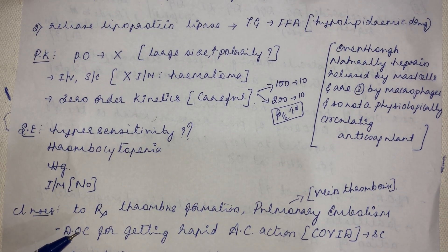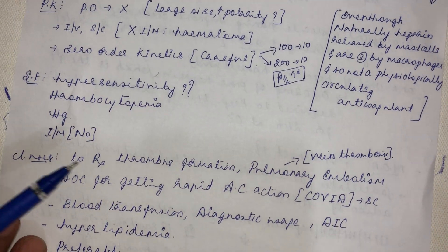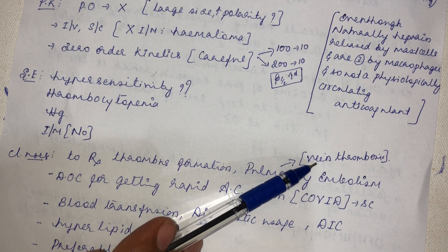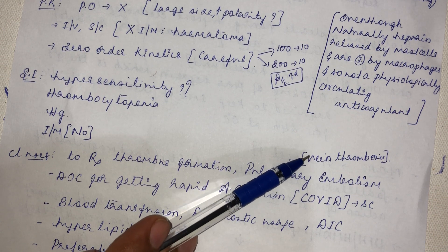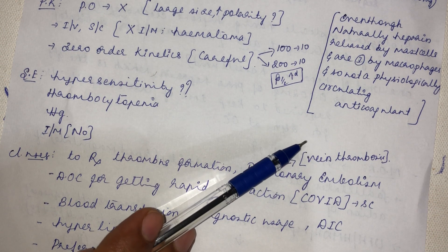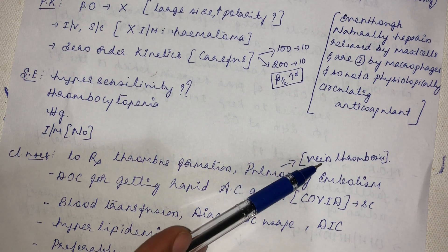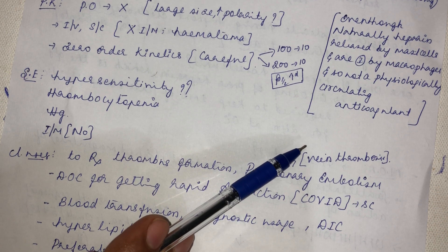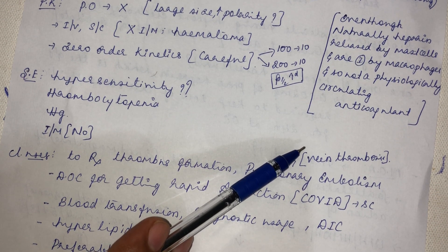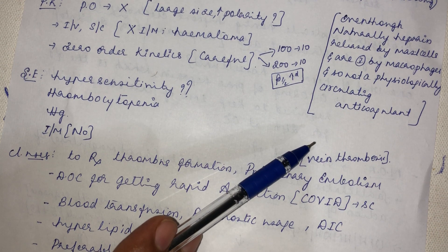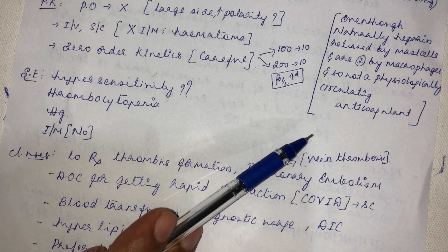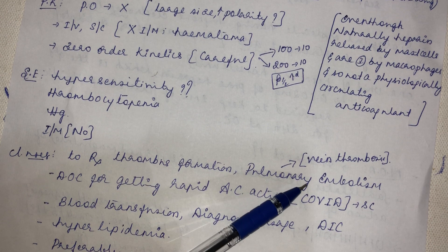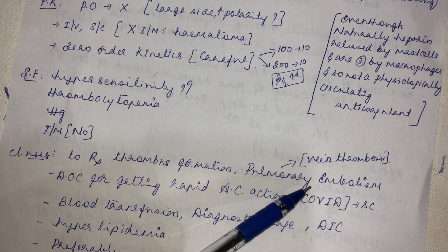Clinical uses of heparin include treating thrombus formation and pulmonary embolism, preferably venous thrombosis. Anti-coagulants are primarily used to prevent thrombus and emboli in veins, whereas other drugs are used for arterial thrombus. Heparin is the drug of choice for rapid anti-coagulant action, used in ICU and emergency treatment for COVID patients.